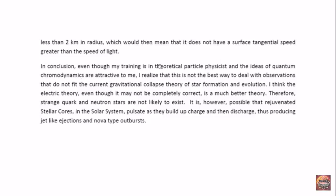But in conclusion, even though my training is in theoretical particle physics and the ideas of quantum chromodynamics are attractive to me, I realize that this is not the best way to deal with observations that do not fit the current gravitational collapse theory of star formation and evolution. I think the electric theory, even though it may not be completely correct, is a much better theory. Therefore strange quark and neutron stars are not likely to exist. And if neutron stars do not exist, then black holes do not exist either. However, it's possible that rejuvenated stellar cores in the solar system pulsate as they build up charge and then discharge, thus producing jet-like ejections and nova-type outbursts which have been observed in the inner solar system.